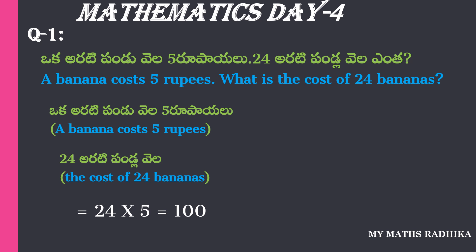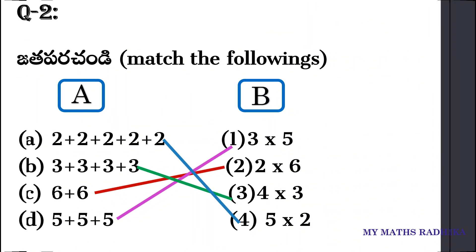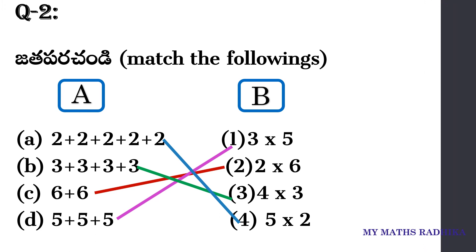The cost of 24 bananas is $2.50. What is the cost of 24 bananas?